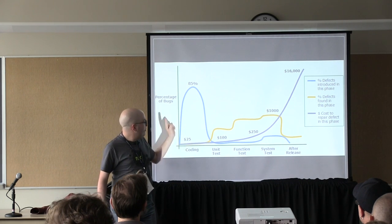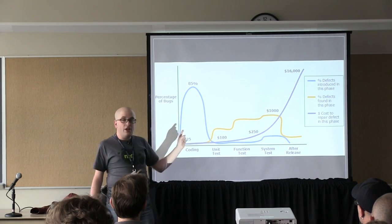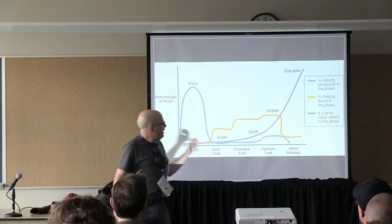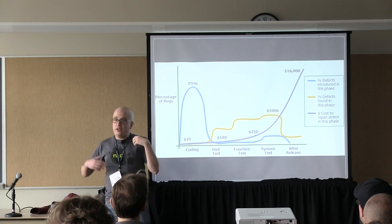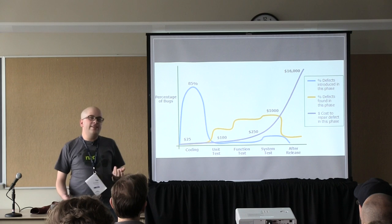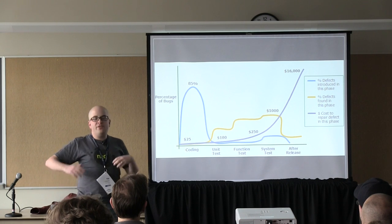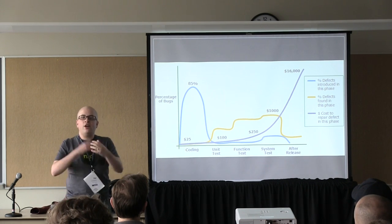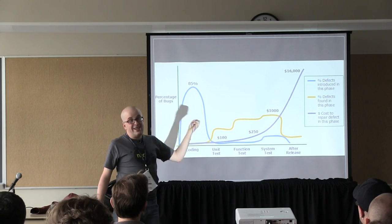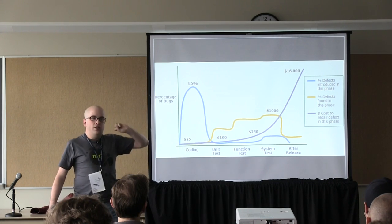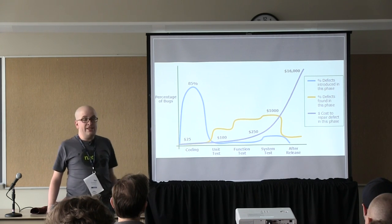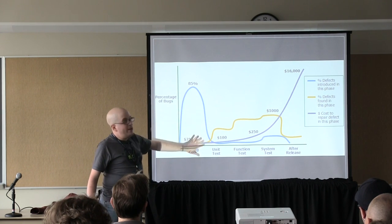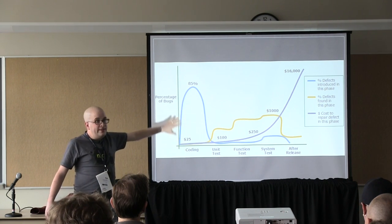If you can fix the bug before you even make it to unit test while you're still coding, it's almost free. However, if the bug makes it to a QA pass, you've wasted an entire iteration — you've spent QA time documenting it and have to go through all those processes. If it makes it out to production, it's way more expensive including all the cleanup time. We need to fix as many bugs as possible early.